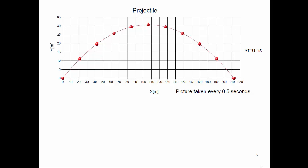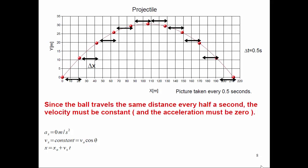If you look closely, the distance it travels in the X direction every half a second is constant. So every half a second, it moves about 21 meters in the X direction. If we consider the sun directly overhead, the shadow would move across the yard about 21 meters every half a second. So the velocity in the X direction is constant, meaning the acceleration is zero.